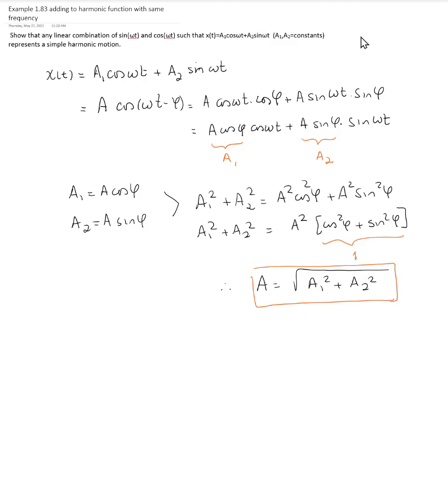We can then also work with the phase angle, and if we divide these two expressions, A sine of phi divided by A cosine of phi, A cancels out, and then we have the tangent of phi will equal A2 divided by A1.